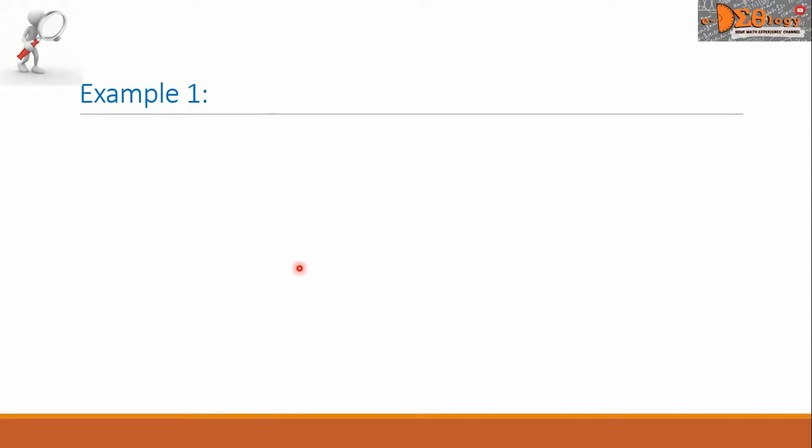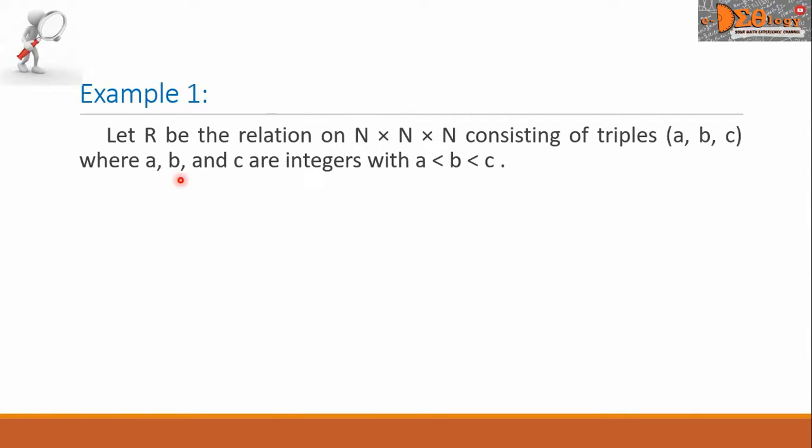Let us see example 1. Let R be the relation on capital N times capital N times capital N, consisting of triples A, B, C, where A, B, and C are integers with A less than B and B less than C.